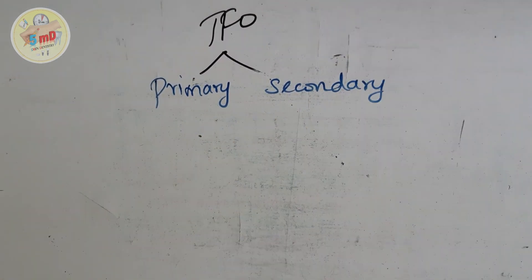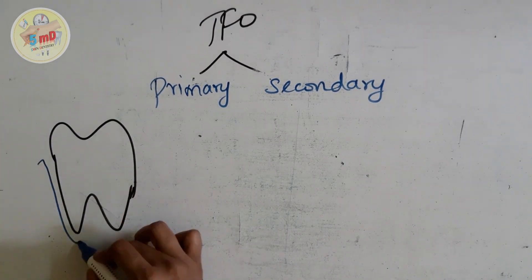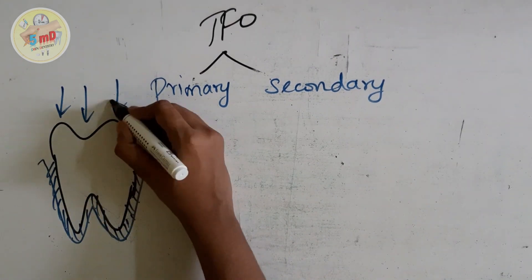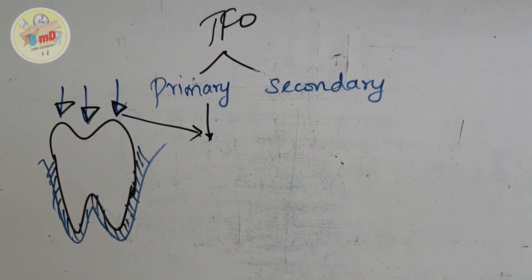This trauma from occlusion can also be classified as primary and secondary. As we already saw, there are two components: one is the occlusal forces, another is the periodontium, which are responsible for TFO.